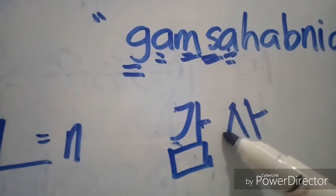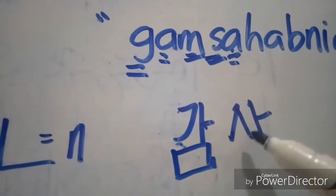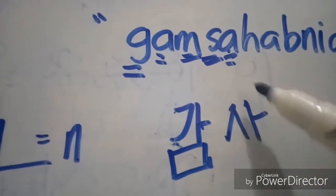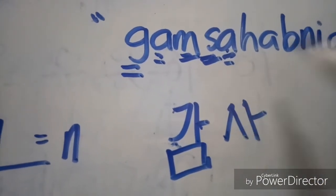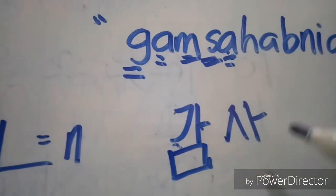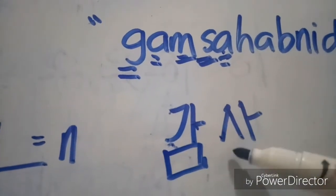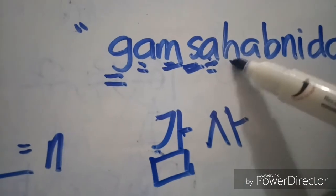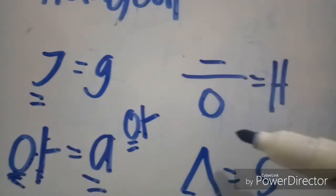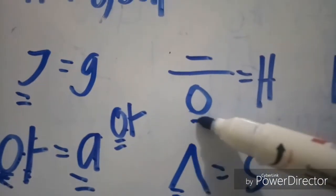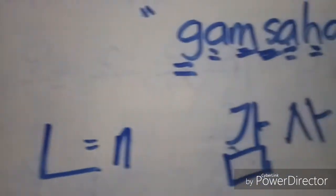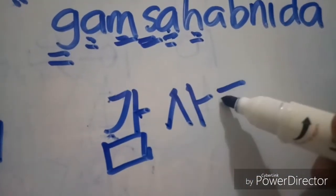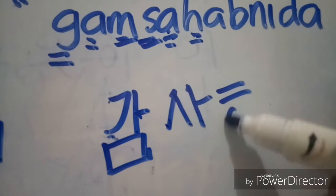Letter A — just copy this one. We have to write it down here next to it. You don't have to write the circle, as I explained earlier. This is 'SA'. The next one is letter H, so we just have to write it here next to 'SA'.